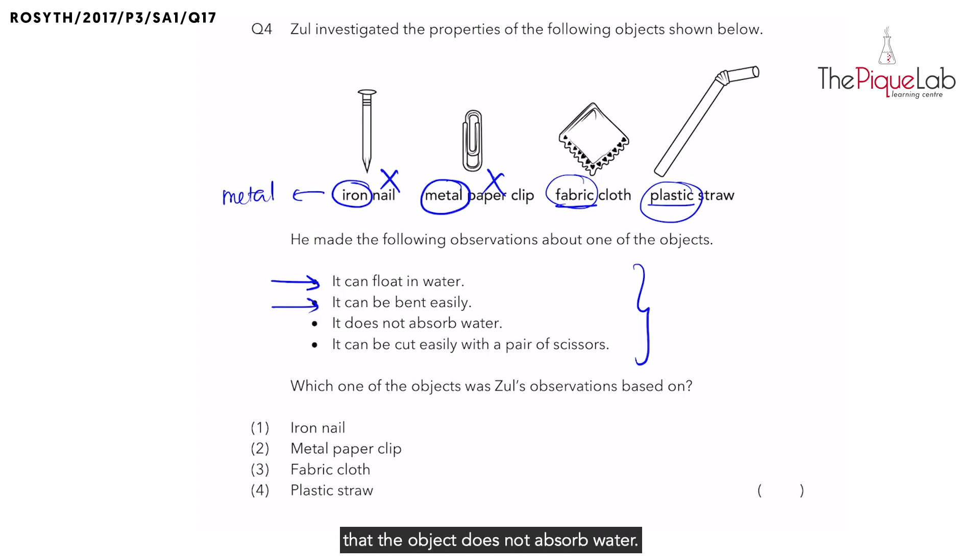Third observation tells us that the object does not absorb water. With regards to the fabric cloth, we know that fabric is an absorbent material. Hence, the fabric cloth would absorb water. So we can now eliminate the fabric cloth.